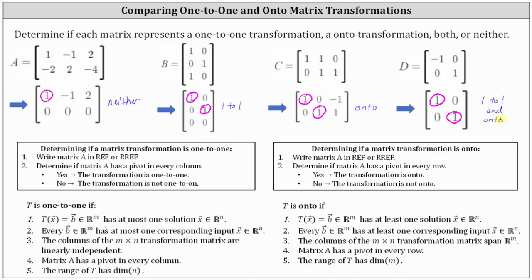When we have a transformation that is both one-to-one and onto, we can say the transformation is an isomorphism, or that we have an isomorphic transformation. I hope you found this helpful.